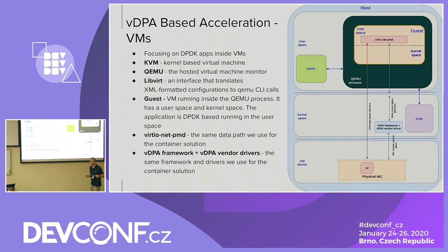For VMs, we have libvirt, KVM, and the QEMU process. Inside the guest there is a kernel and user space; for acceleration, we typically have a DPDK application with a VirtIO-net PMD in user space. It talks directly with the physical NIC data plane via memory mapping all the way down, using the same VDPA framework we saw for containers. The same framework can support both containers and VMs.